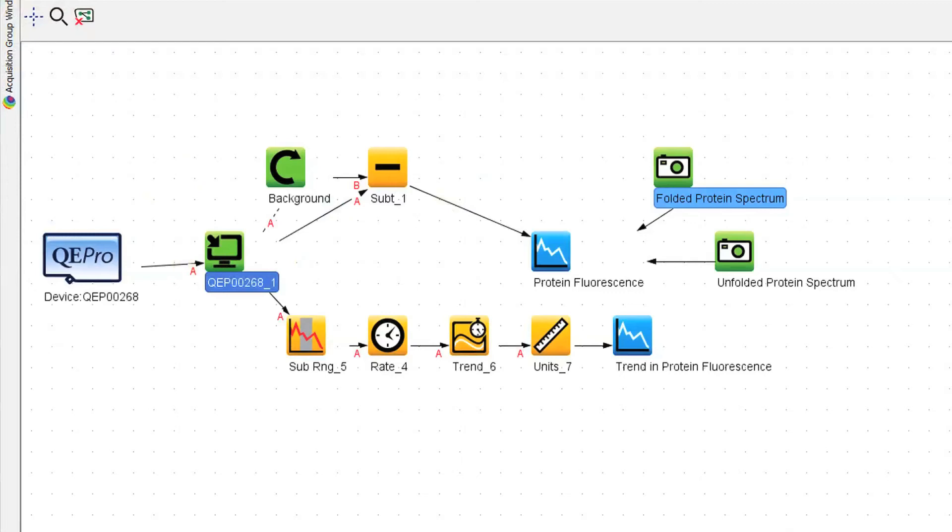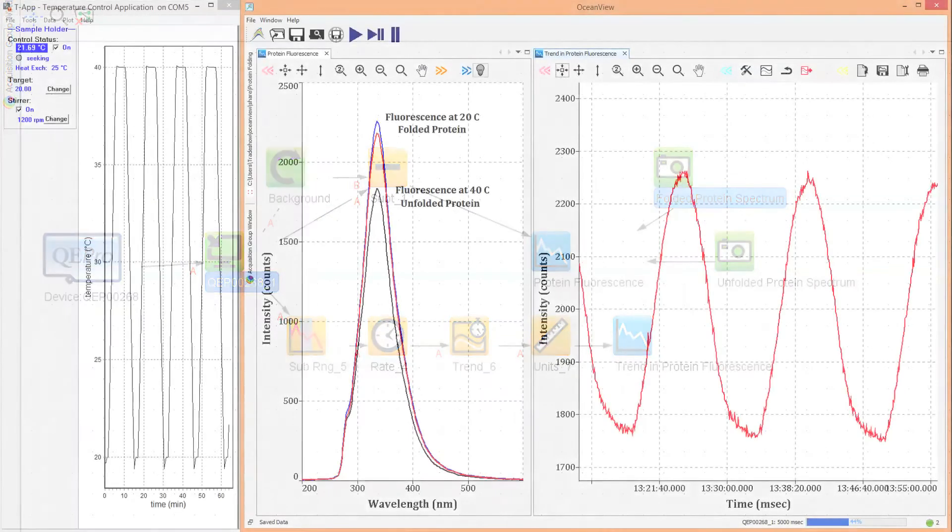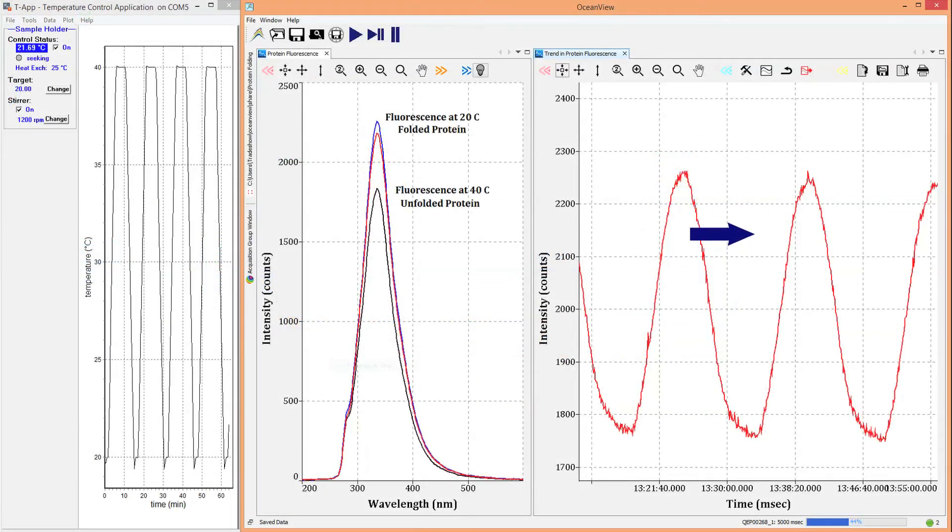Using this setup, we can ramp the temperature between 20 and 40 degrees Celsius and watch the protein fold and unfold over many cycles.